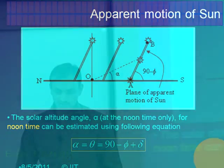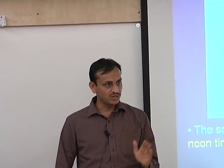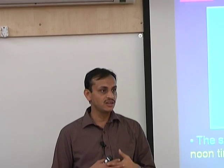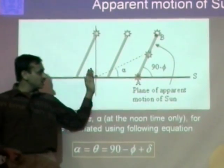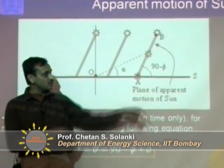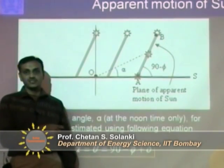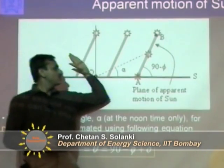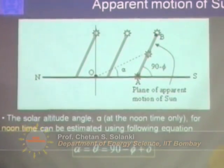One thumb rule for all solar collectors including thermal and PV: if you are in the northern hemisphere, you should face your collector towards the south. For us in India, the sun is always in the south most of the time. But if you go to Australia, the sun will be in the north for you. Because we are in the northern hemisphere, the sun is always in front of us towards the south direction. Therefore, our panel should always be facing towards the south.